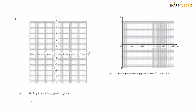Question number four: draw the graph of x² + y² = 4. Since 4 = 2², the radius is 2, so this is a circle with radius 2 centred at the origin. The circle passes through the points (2, 0), (−2, 0), (0, 2), and (0, −2). Draw carefully through those four points.